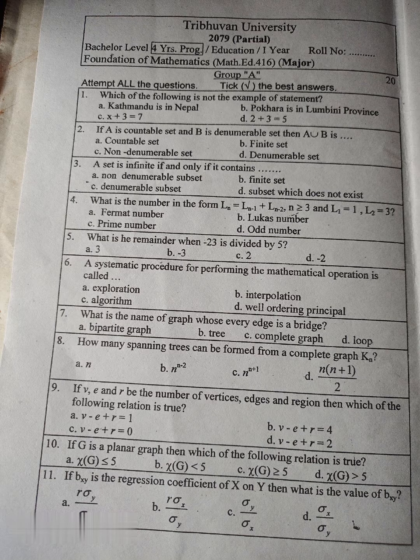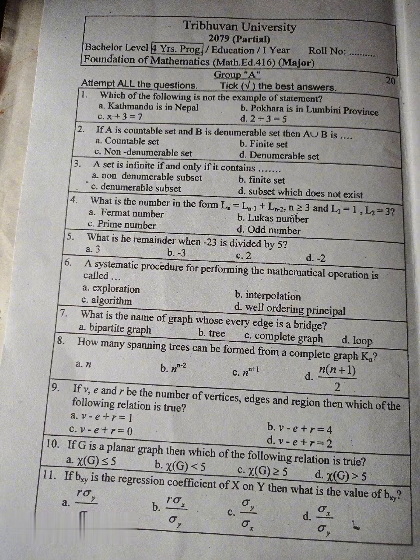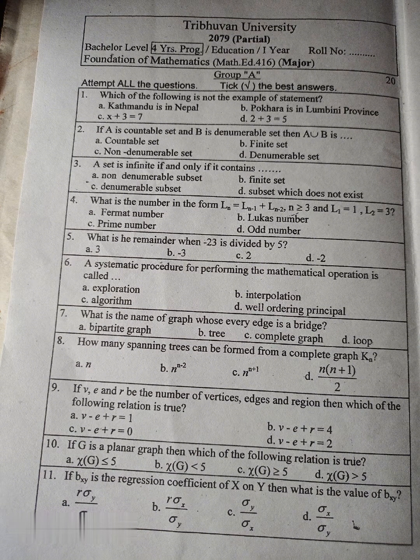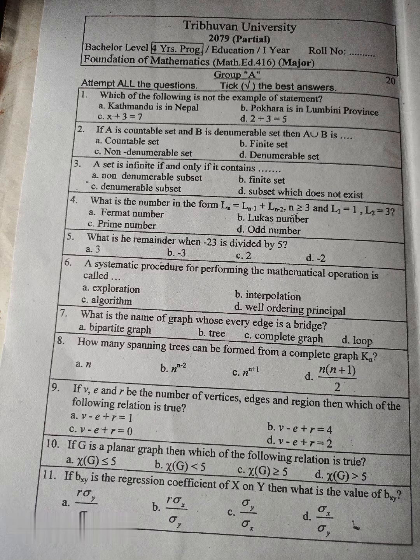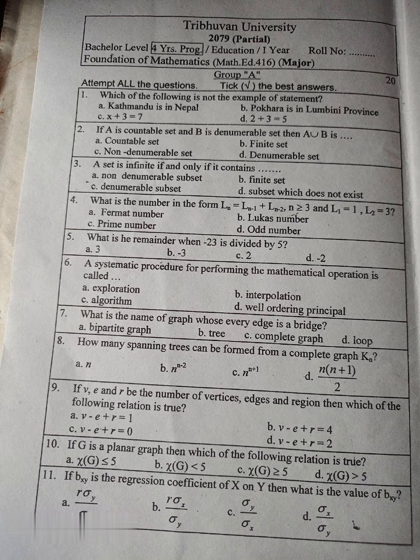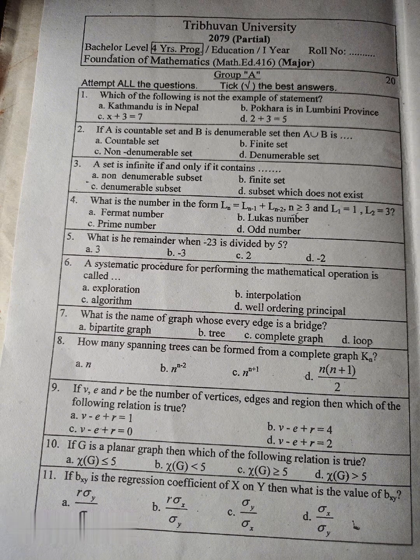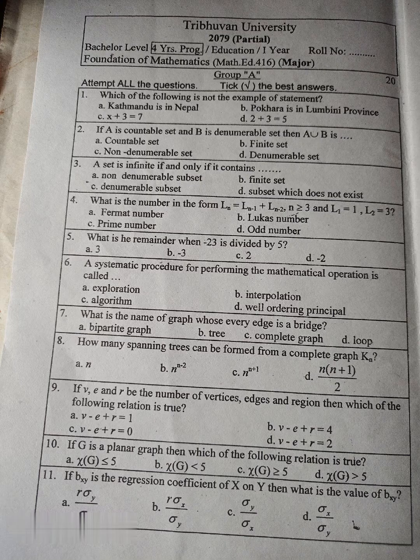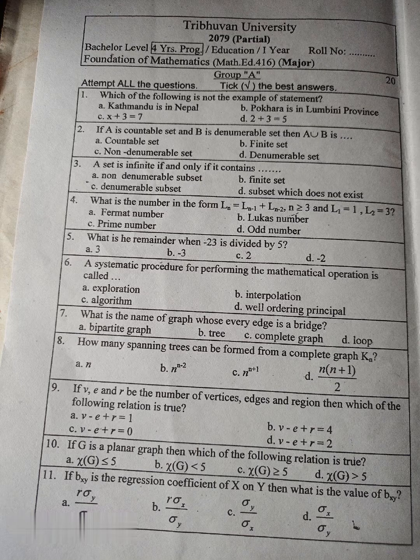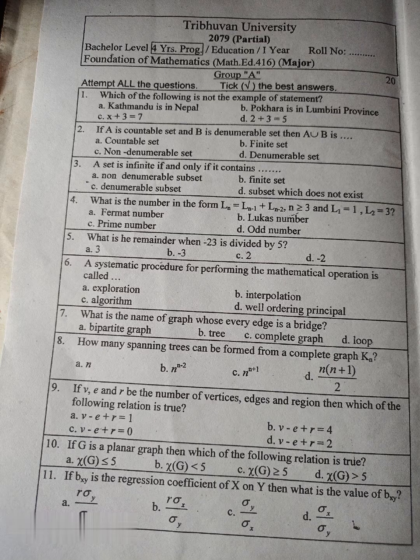Question number 5: What is the remainder when minus 23 is divided by 5? A. 3, B. minus 3, C. 2, D. minus 2. Question number 6: A systematic procedure for performing the mathematical operation is called... A. exploration, B. interpolation, C. algorithm, D. well-ordering principle.